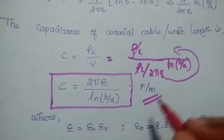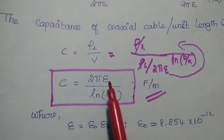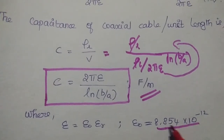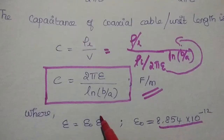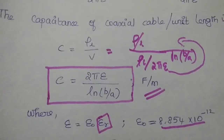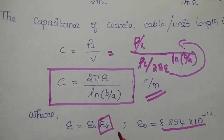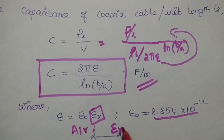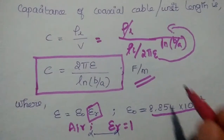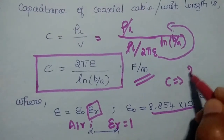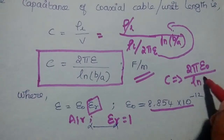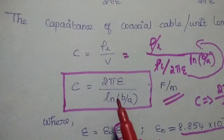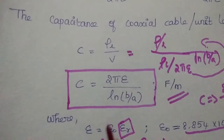The unit is Farad per meter. Here epsilon equals epsilon naught into epsilon R, where epsilon naught is 8.854 into 10 to the power of minus 12, and epsilon R depends on the dielectric material used. Suppose the dielectric material is air — in that case epsilon R equals 1 — and the capacitance can be written as 2 pi epsilon naught divided by ln(B by A). This is for air. This is a very important formula for finding the capacitance of a coaxial cable.